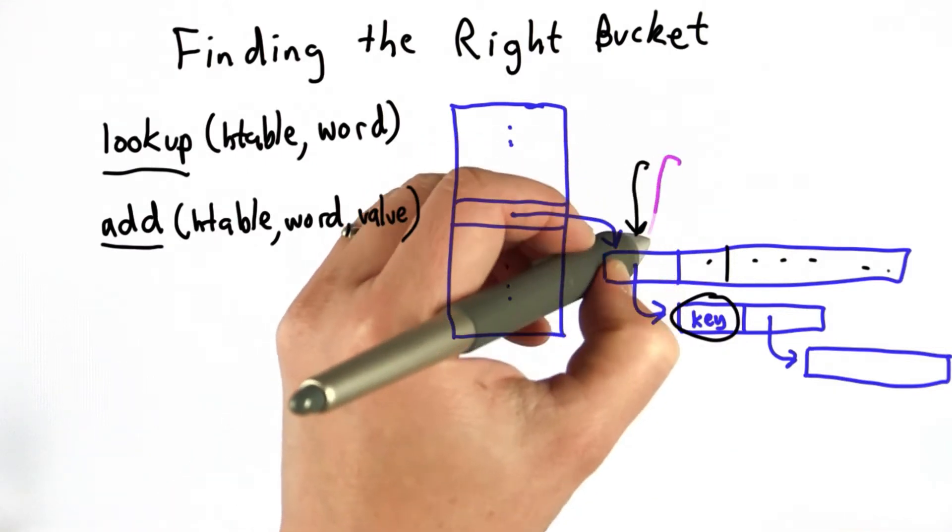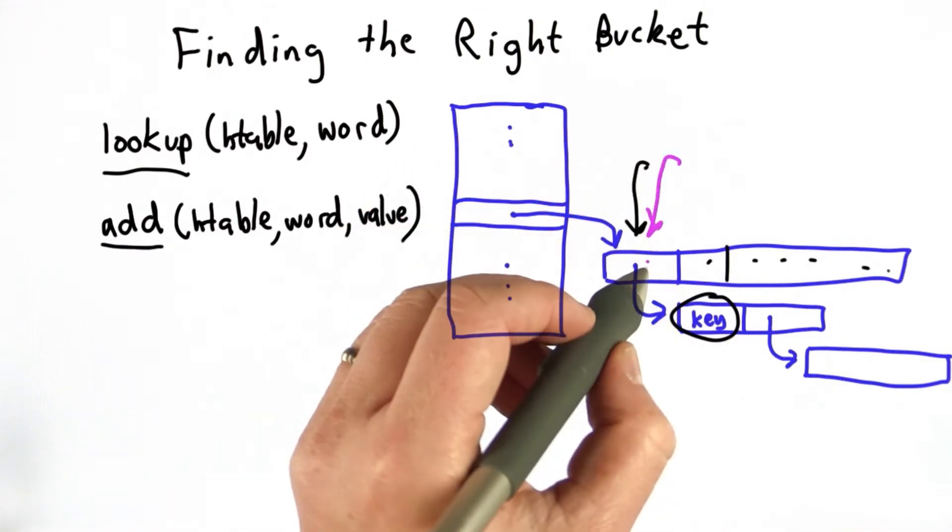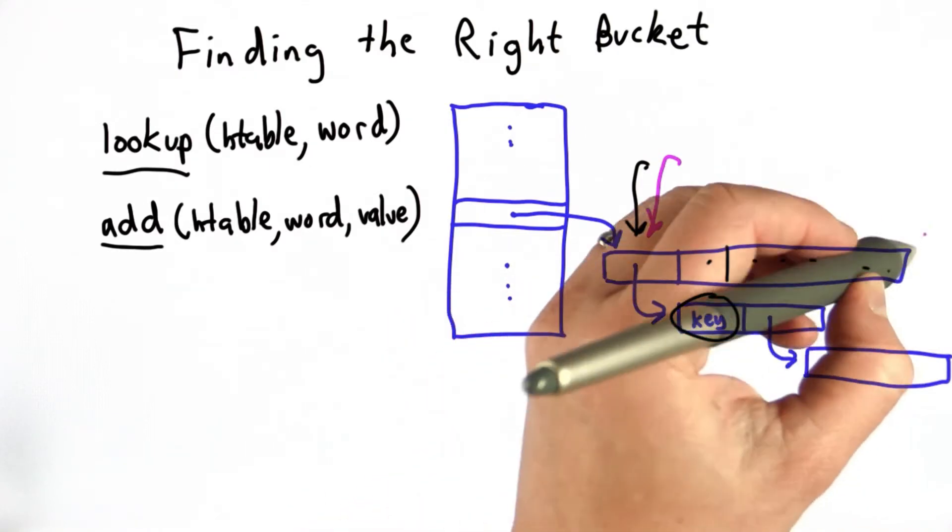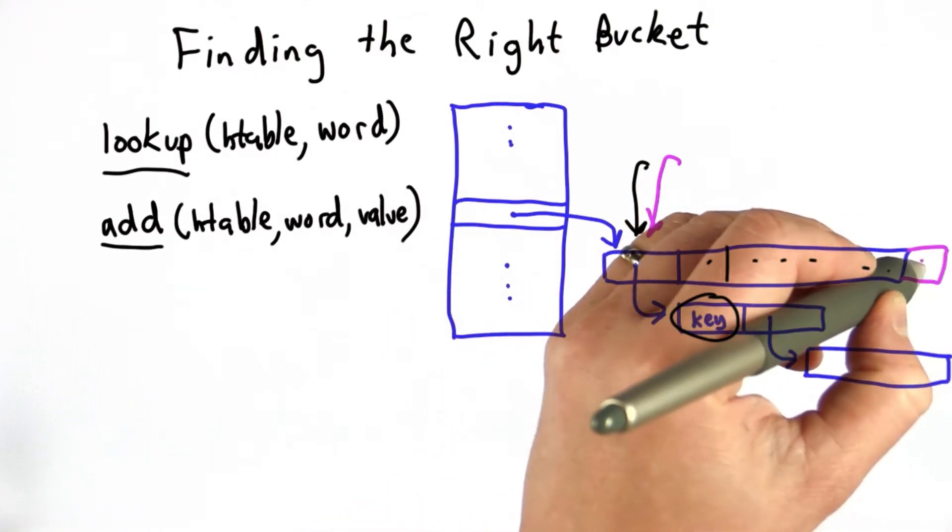If we're doing add, we also need to start by finding the right bucket. Then we're going to look through and see if that word already exists. If it doesn't exist, we can add a new word, and we'll have a new entry with that word and that value.